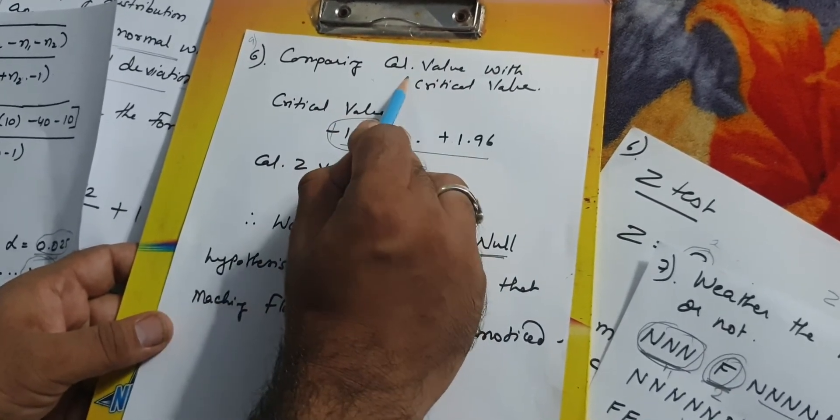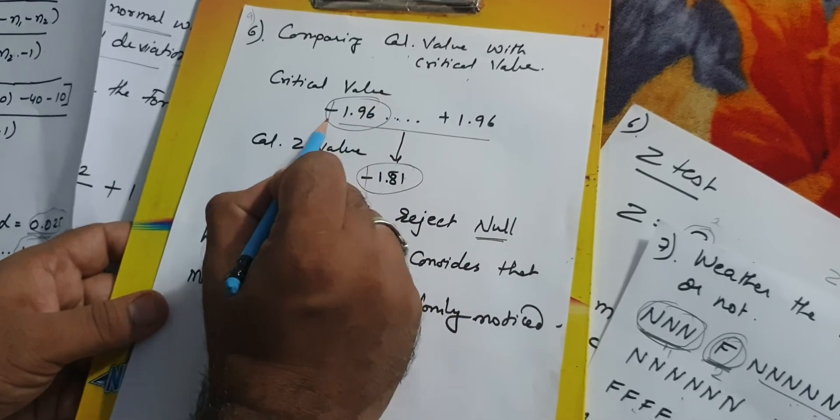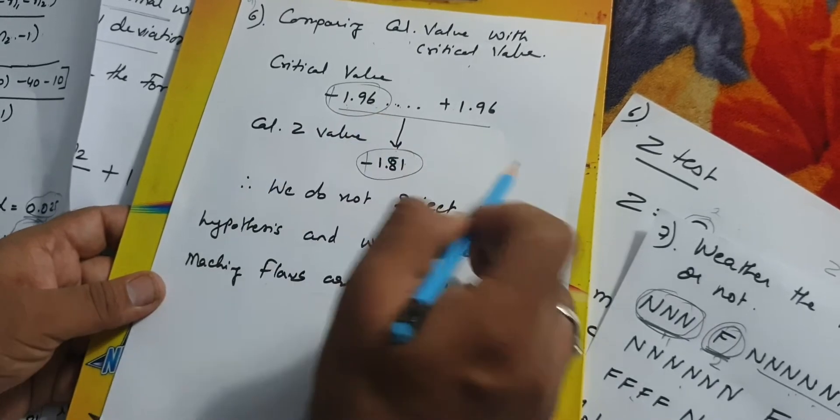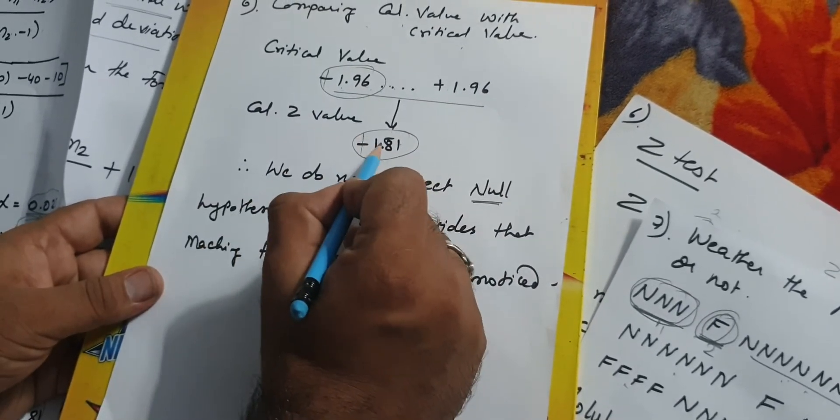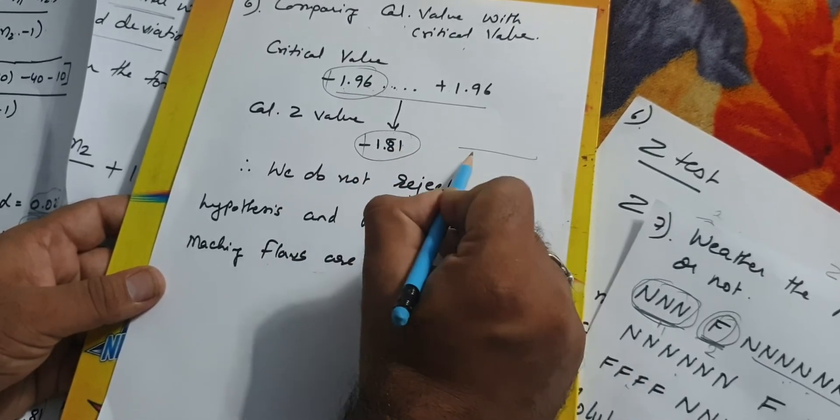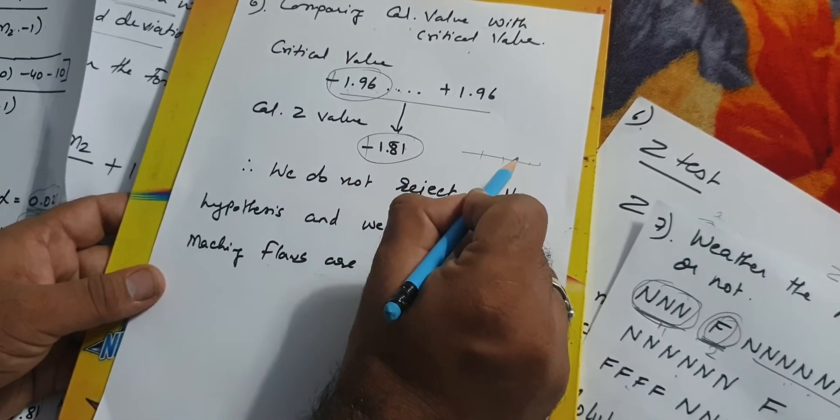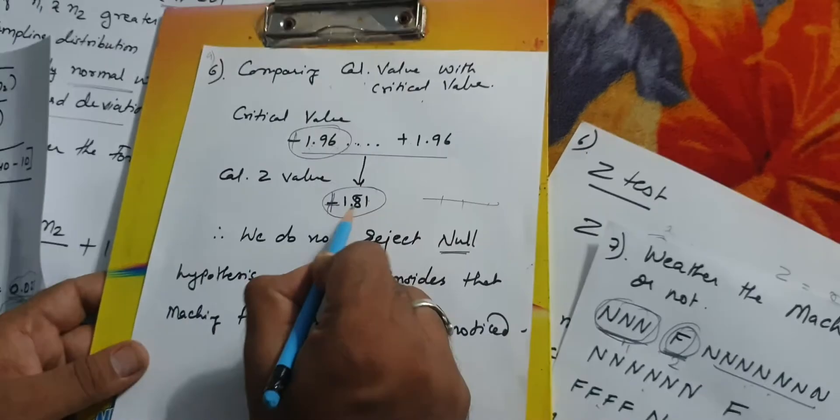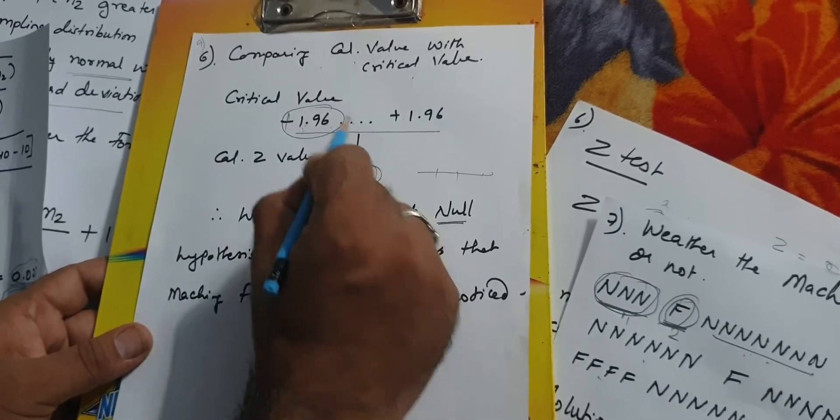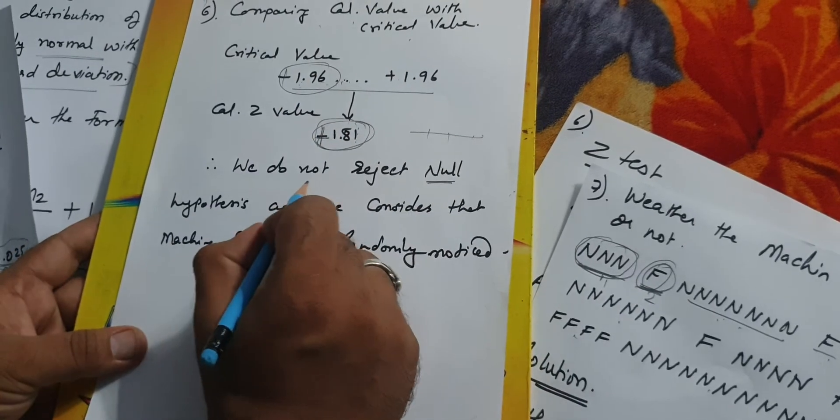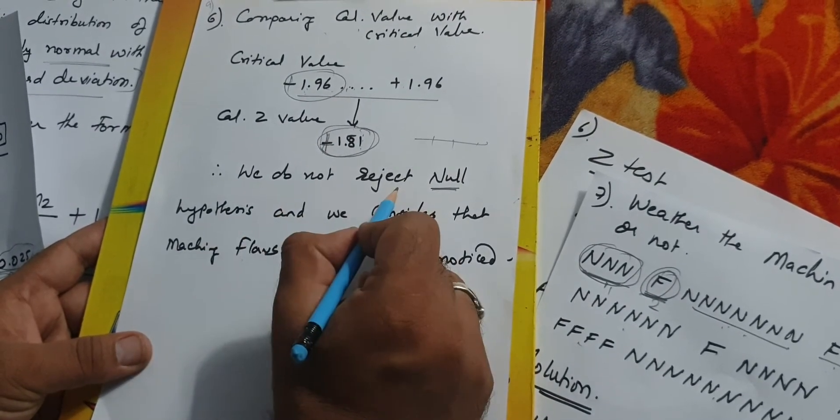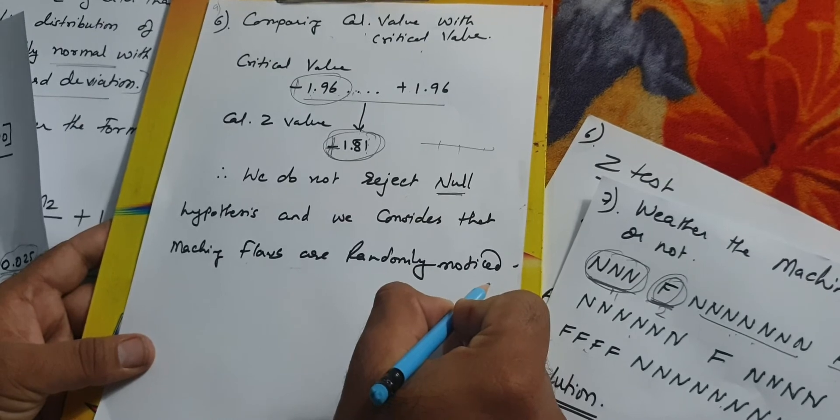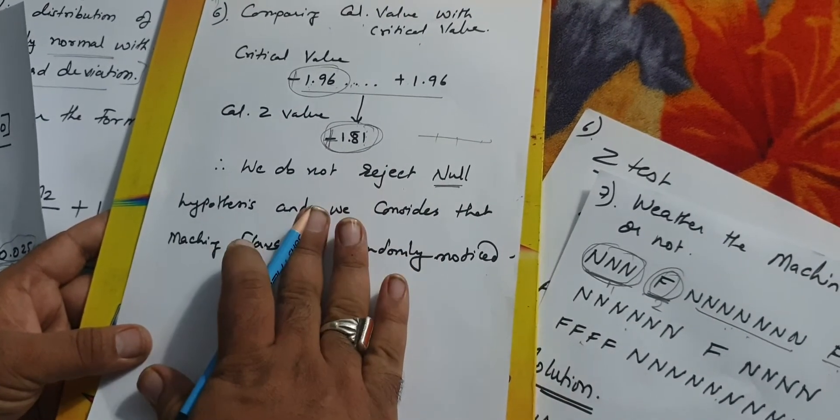The last step is to compare critical value with calculated value. Our critical value was plus or minus 1.96. We got the value negative 1.81. Don't follow the rule of number line in this case. Just take the absolute value and compare it. 1.81 is within your range of 1.96. We do not reject the null hypothesis and consider that machine flaws are randomly noticed, not intentionally noticed.